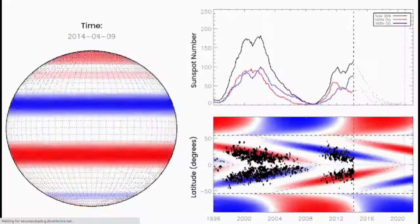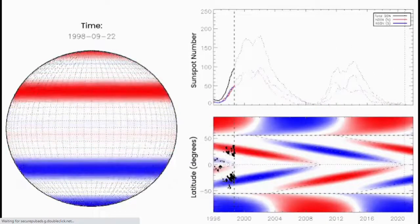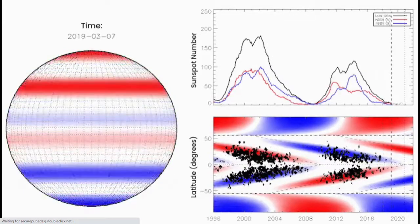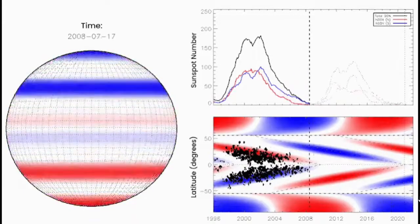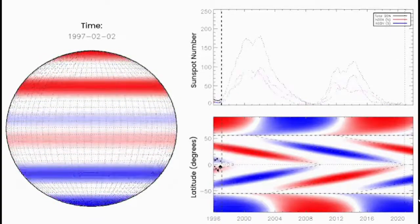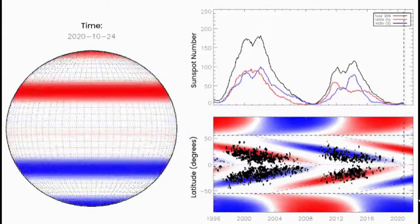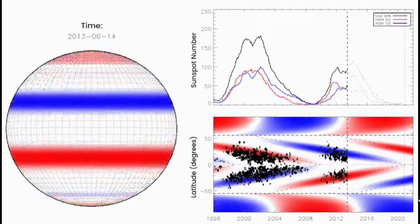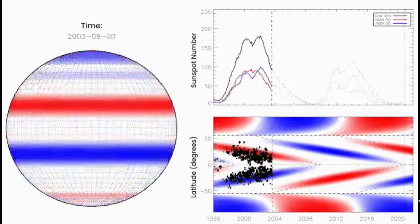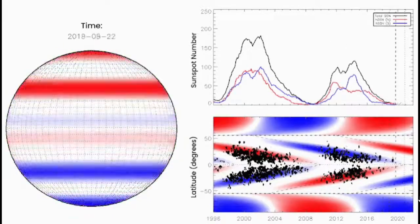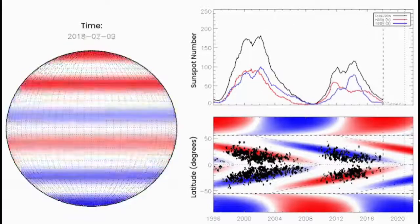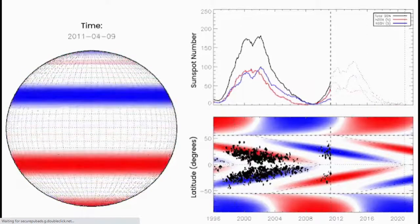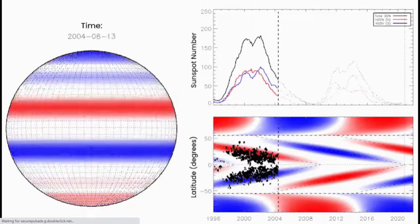Let's go ahead and jump into some of this information. It quotes, something big may be about to happen on the Sun. We call it the termination event, says Scott McIntosh, a solar physicist at the National Center for Atmospheric Research, also known as NCAR. What is a termination event? He states, I've never heard of the termination event — you're not alone. Many researchers have never heard of it either.